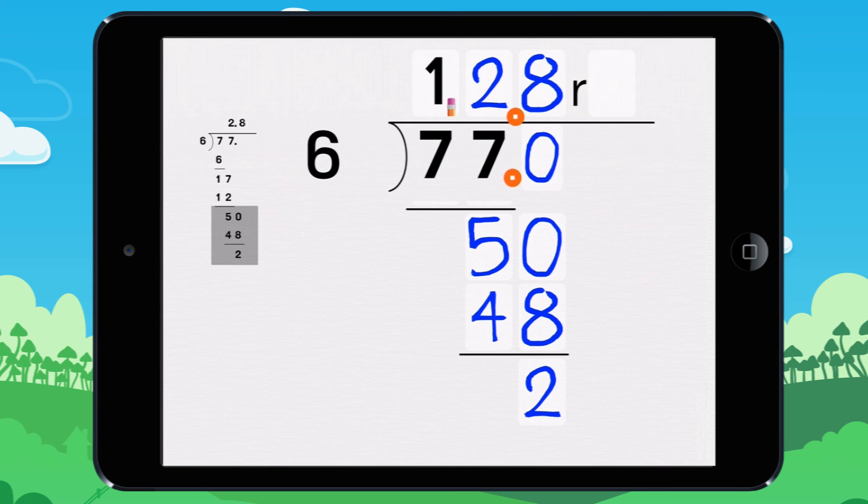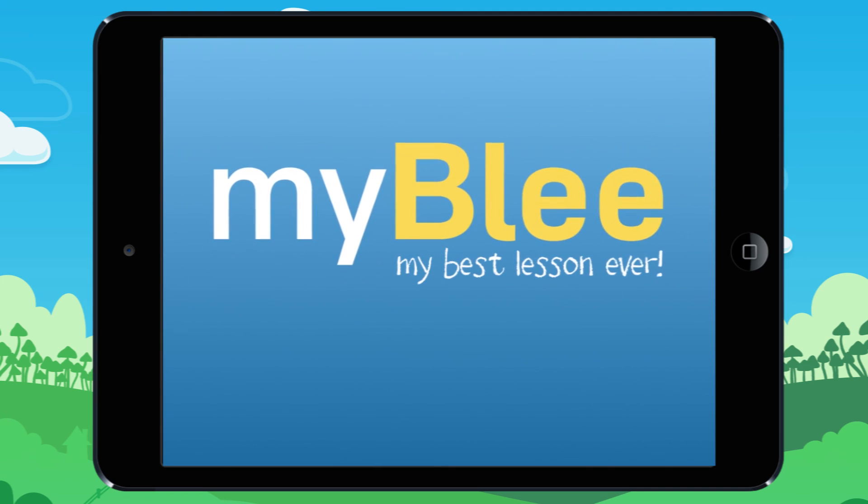77 divided by 6 to the tenth decimal place equals 12.8.